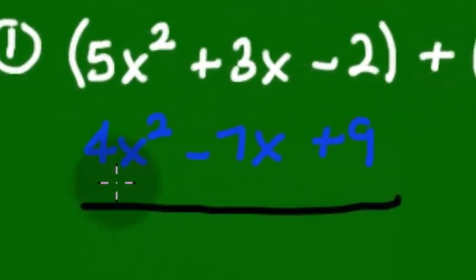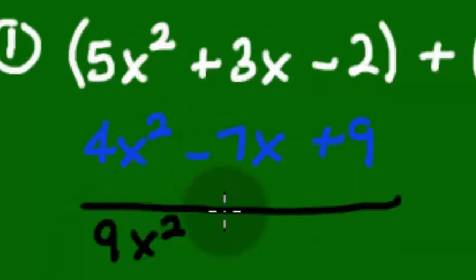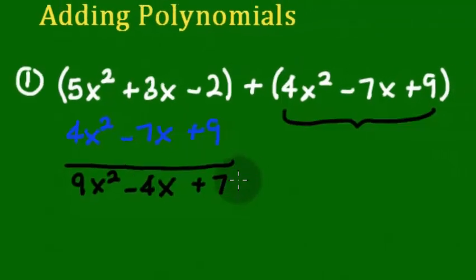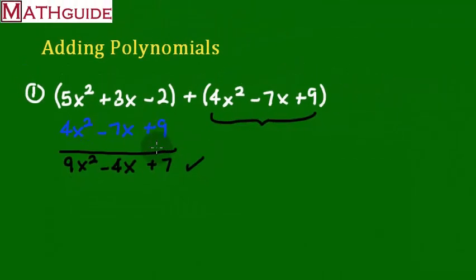So we're going to add these two together, and we are going to get 9x squared. Let's see, 3 and negative 7 makes negative 4. You'll notice I'm just adding the coefficients, or in other words, the numbers in front of the letters. These two don't have any letters, so 9 and negative 2 makes 7. And there you go. That is the solution to that problem.